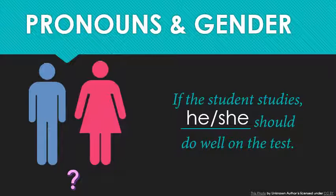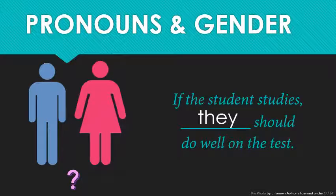The more modern solution, which is gaining support — originally grammarians did not like this, but it's becoming more and more popular, and this is the approach I recommend — is the third person singular 'they.' So if you're reading or listening and someone says 'they' but they're not referring to more than one person, chances are they're trying to avoid the whole he/she problem. 'They' can be used singularly. 'If the student studies, they should do well on the test.'